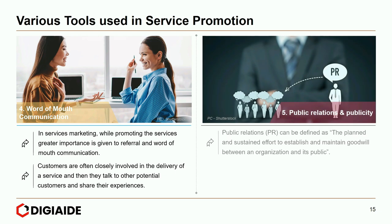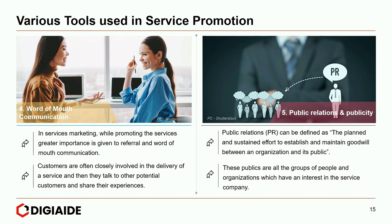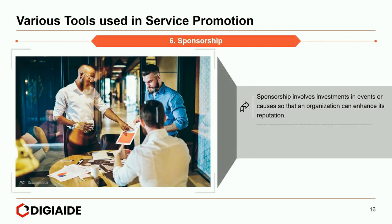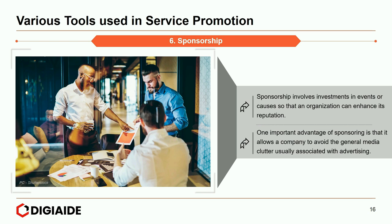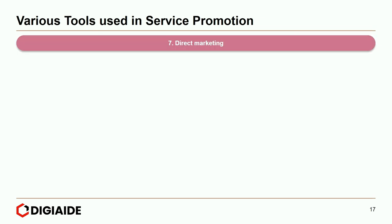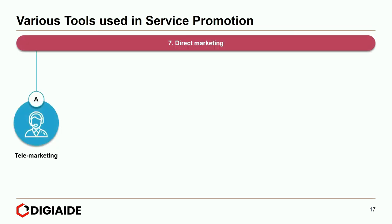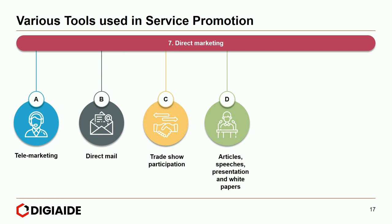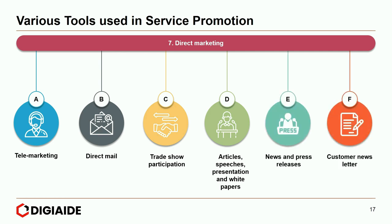Moving on to the fourth tool, word of mouth communication — which works brilliantly in the era of social media. In service marketing, greater importance is given to referral and word of mouth communication. Uber in the initial days used word of mouth to their advantage. Customers are often closely involved in the delivery of a service and they talk to other potential customers and share their experiences. Where people are the deliverers of services, personal recommendation is often the preferred source of information. Next, public relations and publicity — PR can be defined as the planned and sustained effort to establish and maintain goodwill between an organization and its public. Moving on to number six, sponsorship — this involves investments in events or causes so that an organization can enhance its reputation. One important advantage is that it allows a company to avoid the general media clutter found in advertising. And number seven, direct marketing — which entails telemarketing, direct mail, trade show participation, articles, speeches, presentations or white papers, news and press releases, and customer newsletters.